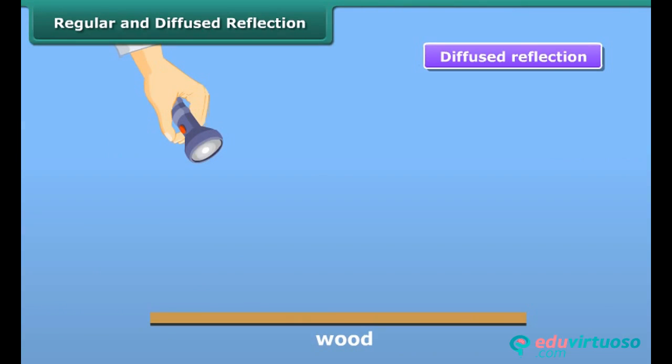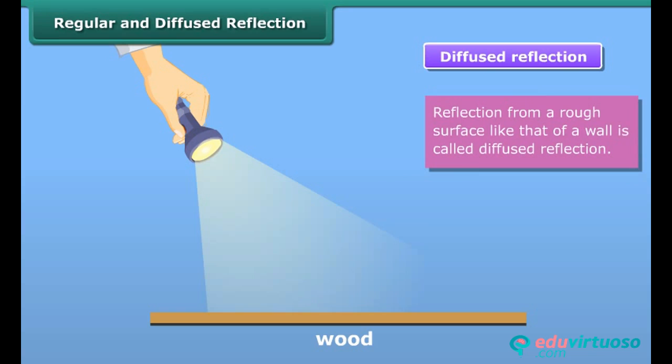Diffused or irregular reflection takes place when a ray of light is incident on a surface such as wall or wood, which is not smooth or polished. An image is not formed in this case.